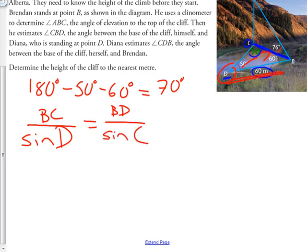Now I'm going to plug in what I know. So I know I'm trying to find BC, so BC over sine 50 is equal to 60 over the sine of 70 degrees.